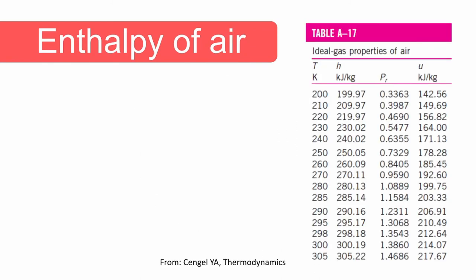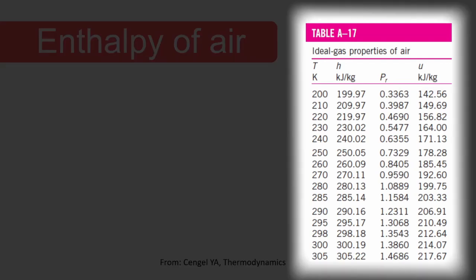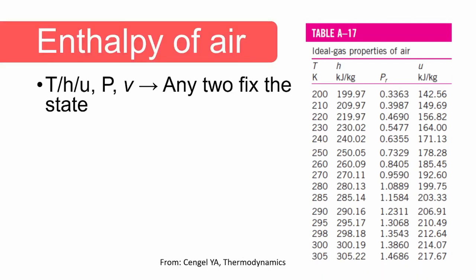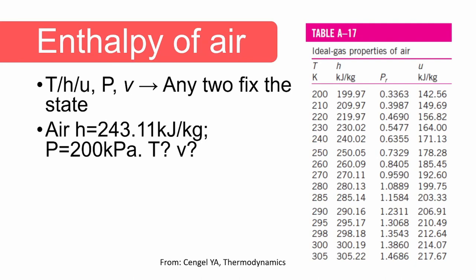Now let's consider air. The value of enthalpy of an ideal gas such as air as a function of temperature is found in the tables. As in the case of internal energy, the enthalpy of air is a property. If we know the value of two independent properties, we can calculate the value of the other unknown properties. It is important to note that in the case of an ideal gas, the values of temperature, internal energy, and enthalpy are not independent, and the value of only one can be specified independently.